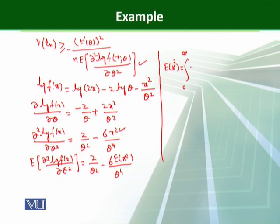into exponential minus x squared over theta squared dx. When you evaluate that - it's a very straightforward integral - when you solve it you will find the answer theta squared. So we just put this result here. That is equal to 2 over theta squared minus 6 times theta squared over theta raised to power 4. When you simplify, you will find minus 4 over theta squared.